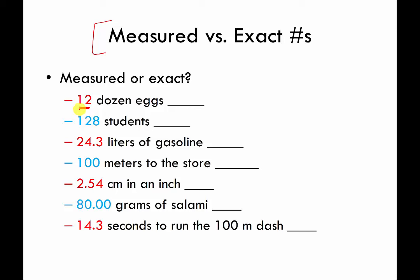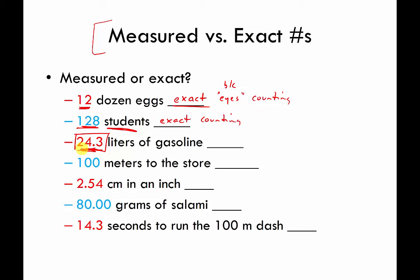If I say that I have 12 dozen eggs, that is an exact number, because the only device I used was my eyes and I was just counting. Same thing with 128 students — assuming I can count correctly, this is an exact number because all I'm doing is counting students or names. If I go to the gas station and the pump tells me I put 24.3 liters of gasoline in my tank, this is a measured number because I used a device — a pump with a meter that reads how much gasoline went into the tank. Maybe I actually put in 24.292 liters, but the pump isn't good enough to tell me down to three decimal places, so it says you pumped about 24.3 liters.